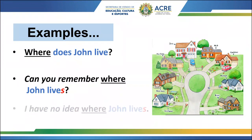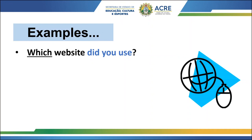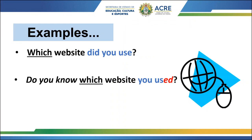'I have no idea where John lives.' Next example: 'Which website did you use?' This is a direct question in the simple past. Now: 'Do you know which website you used?' Notice the verb 'use' is now in the past — 'used' — and we don't use 'did' anymore. 'I don't know which website I used.'